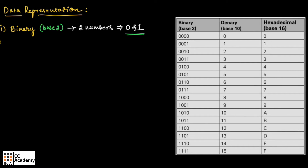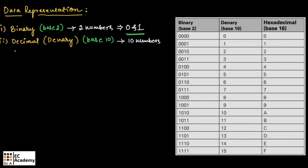The second type of number representation is decimal number representation, or it is also known as denary representation, which is having base 10. This means it is having 10 numbers, from 0 to 9. After 9, we represent the next number as 10, then 11, 12, and so on.